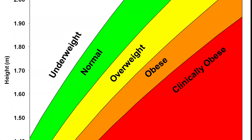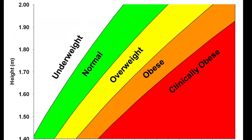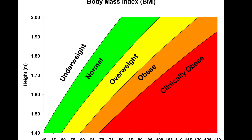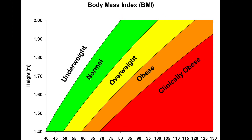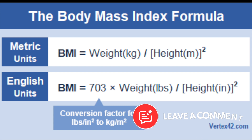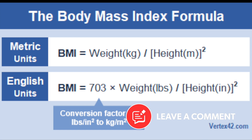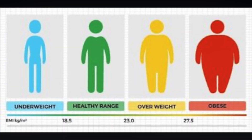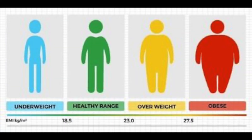BMI is an index that looks at one's body weight divided by their height. The formula is defined as body weight in kilograms divided by height in square meters. The main purpose of the index is to categorize a person as underweight, normal weight, overweight, or obese.